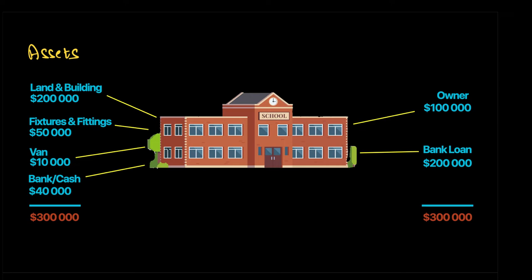The money I invested as the owner is called capital. The key difference between capital and the bank loan is this: the money I invested is a risk I've taken as the owner, and the business has no obligation to repay it back to me. But the money given by the bank must be repaid — this school has an obligation to repay $200,000 to the bank. That obligation is called a liability, because it will result in a future cash outflow.